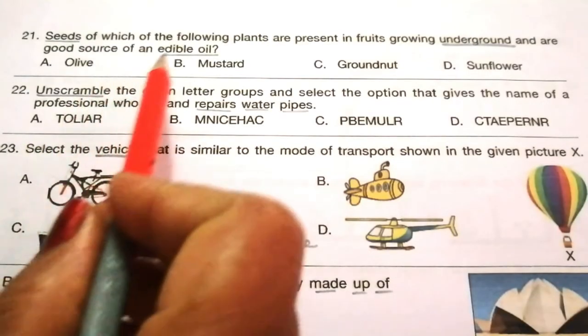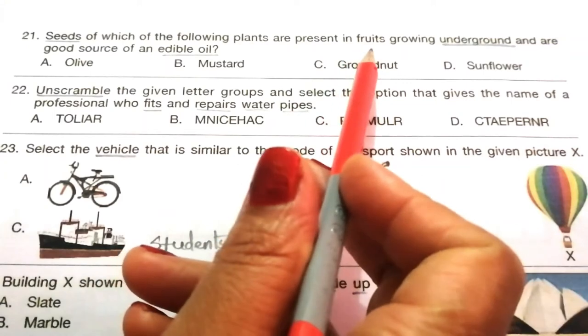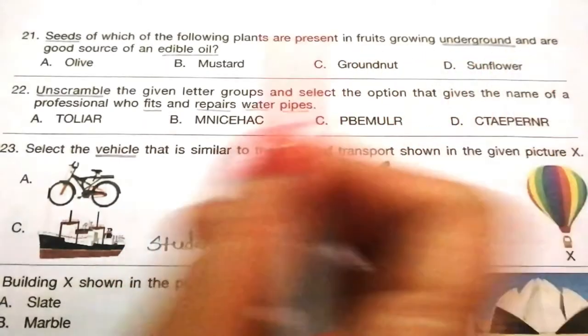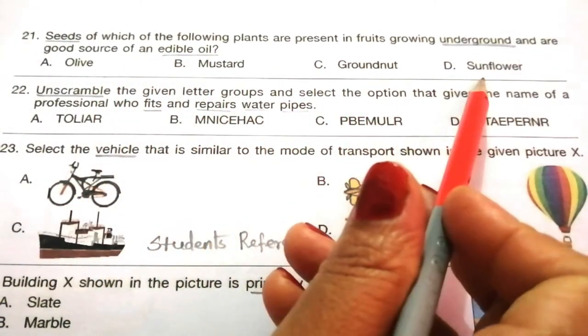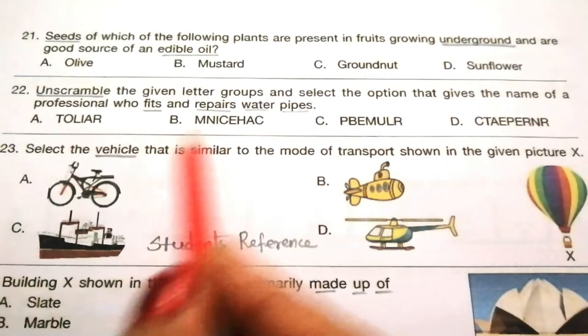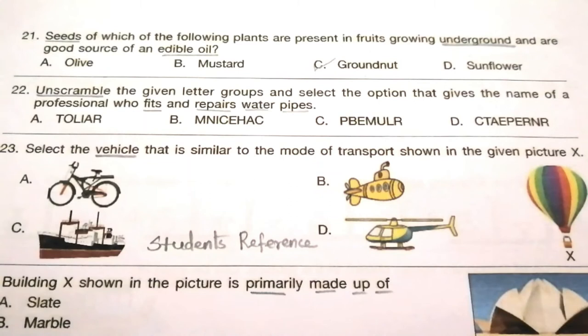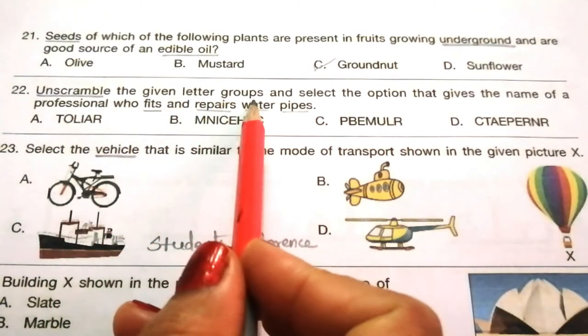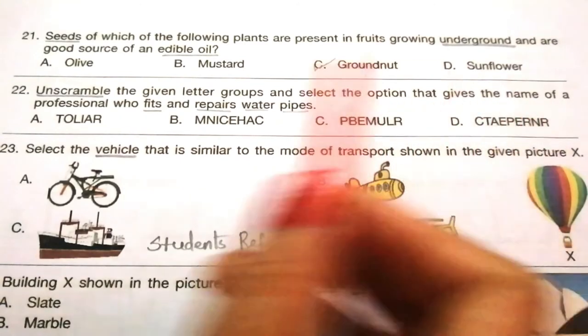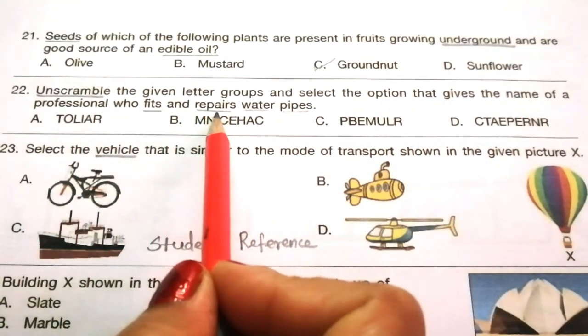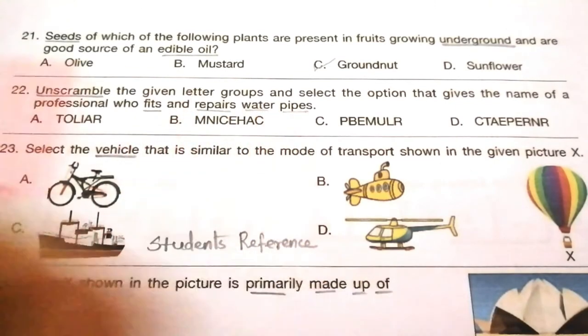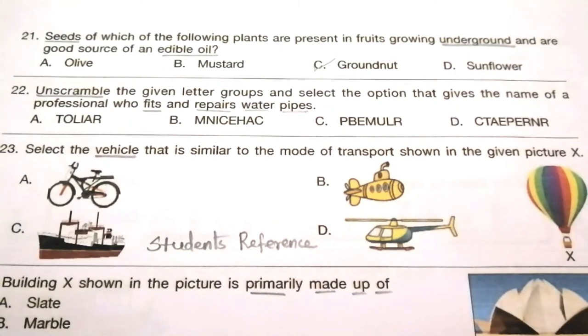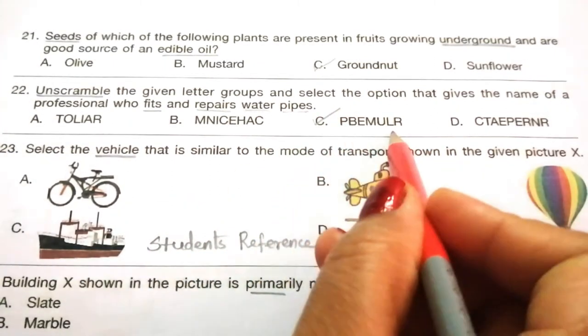Question 21: Seeds of which plant are present in fruits growing underground and are good source of edible oil? Olive, mustard, groundnut, sunflower. The answer is C, groundnut. Question 22: Unscramble the letter groups and select the option that gives the name of a professional who fits and repairs water pipes. If we unscramble this, we will get plumber. So the answer is C, plumber.